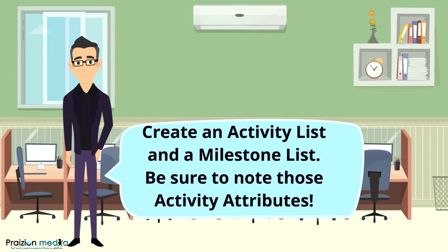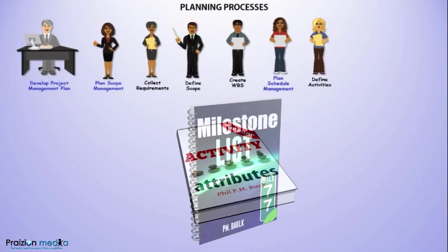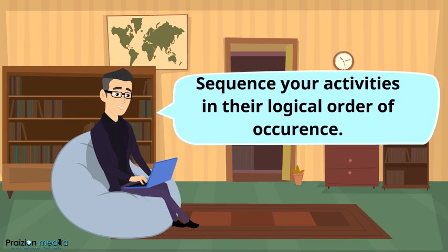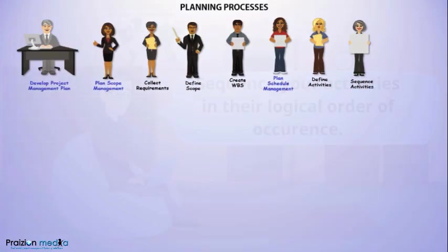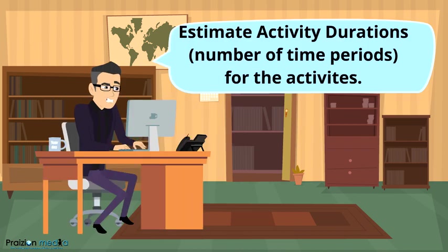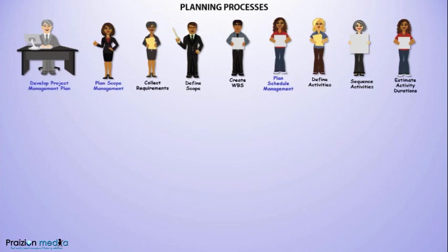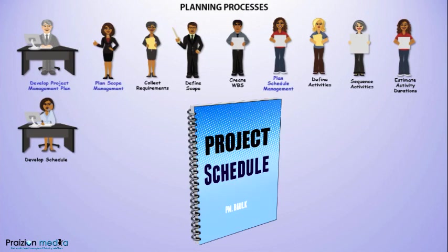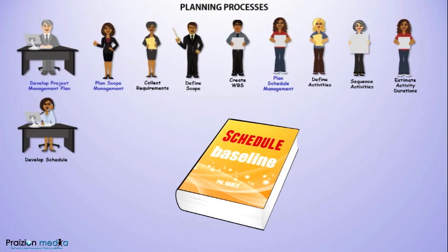Define Activities is where tasks in the schedule are first listed out, with the major output being an Activity List. The next process, Sequence Activities, puts them in logical order of occurrence. In the real world, people might define and sequence activities right away, but these are two distinct processes in the PMBOK Guide. Estimate Activity Durations then estimates durations for different tasks based on available resources. Finally, Develop Schedule brings all information — milestones, tasks, and durations — together into a project schedule. When approved by management or stakeholders, it becomes the Schedule Baseline.